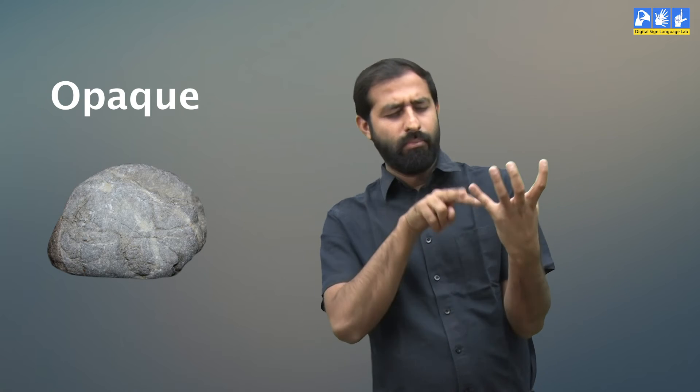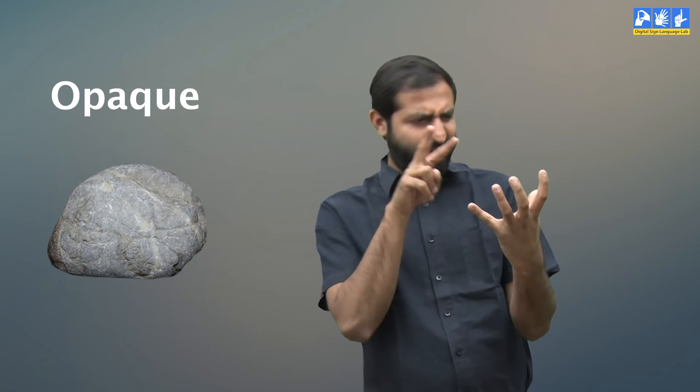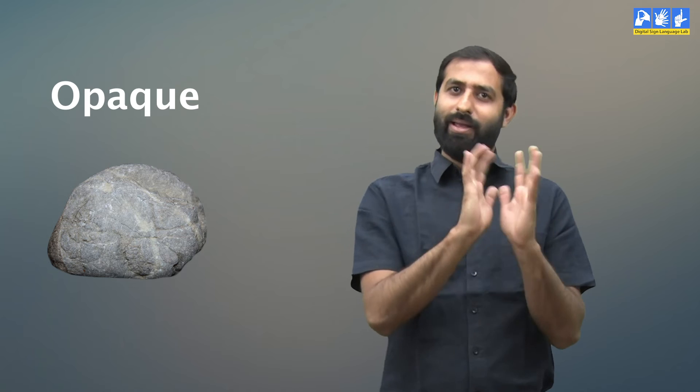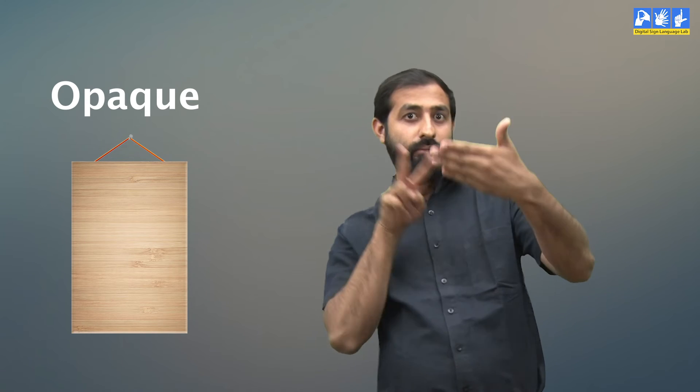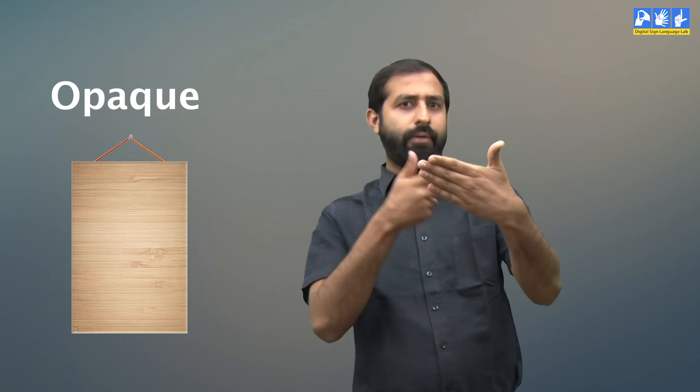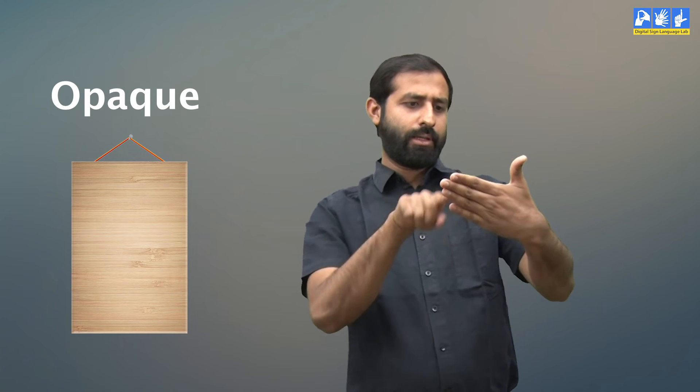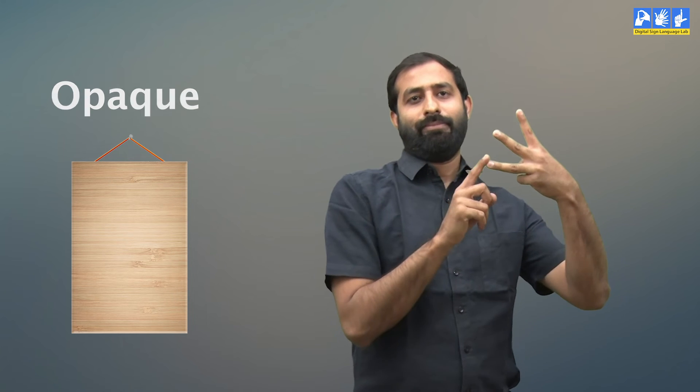Third is opaque materials. Rock is an example of an opaque material. Can we see through a rock? No. Another example is wood. It also doesn't allow any light to pass through, which means we cannot see through it. These materials are called opaque materials.